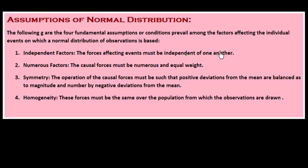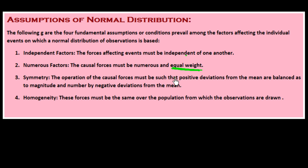The second assumption is numerous factors: the causal forces must be numerous and of equal weight, meaning they should be equal across all events. For example, when tossing a coin five times, the probability of getting a head should always be 1/2 — it should not change according to the number of events. The third assumption is symmetry: the operation of causal forces must be such that positive deviations from the mean are balanced in magnitude and number by negative deviations from the mean.